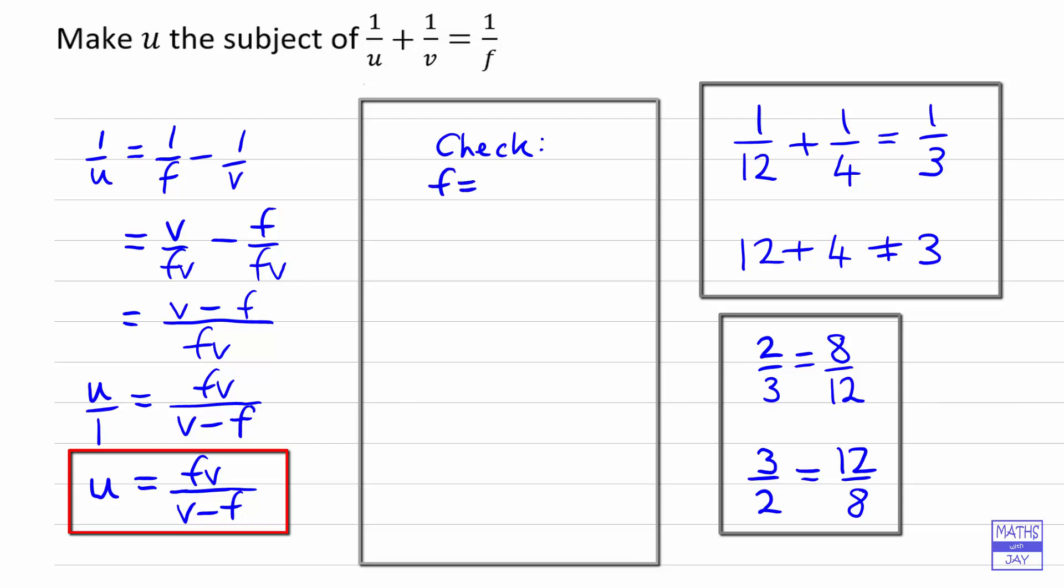So I'll show you what I mean. If we choose F is two, so I'm choosing nice easy whole numbers to work with, and V is six. Then U from my answer down here will be two times six over V minus F, so six minus two. So twelve over four, that's three.